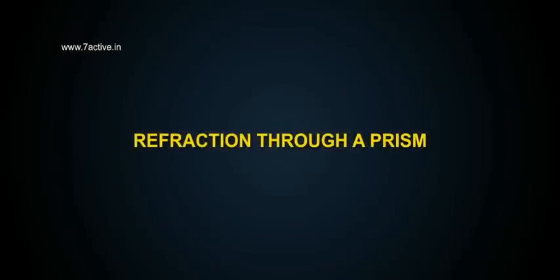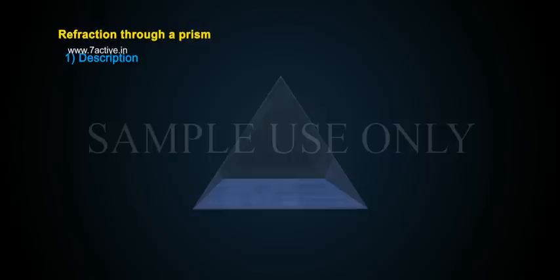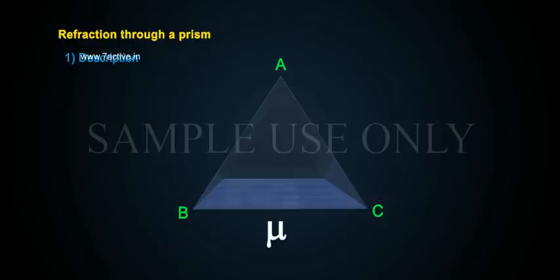Refraction through a prism. Let A, B, C be the principal section of a prism. Let A be the angle of the prism. Let μ be the refractive index of the material of the prism.